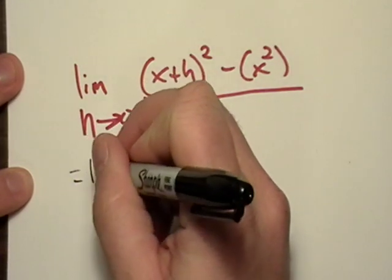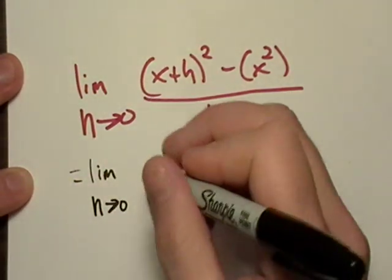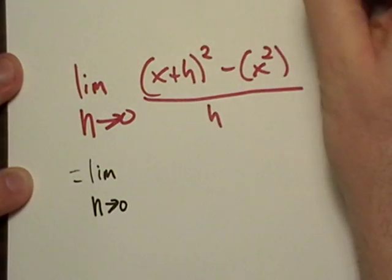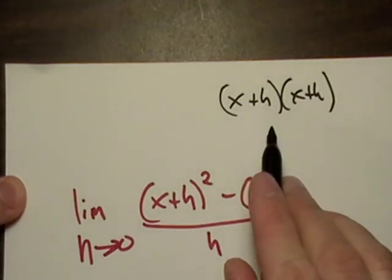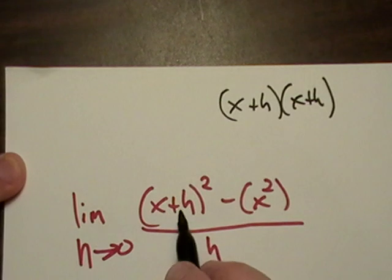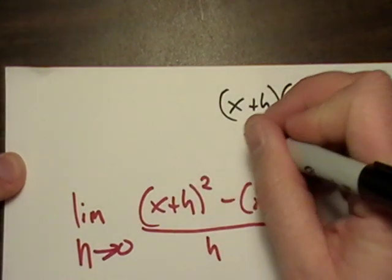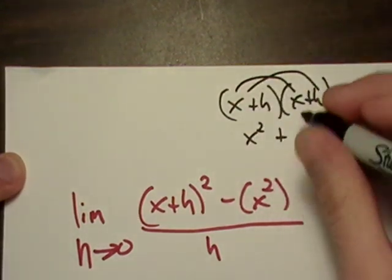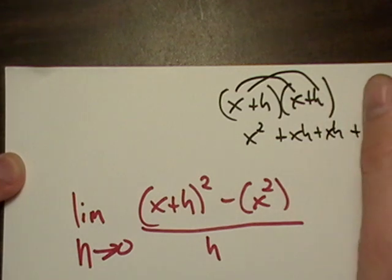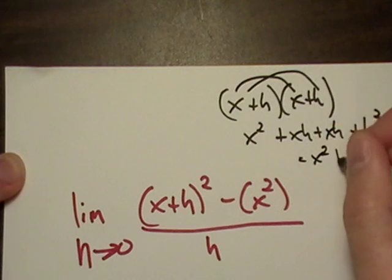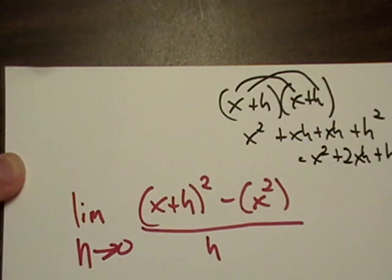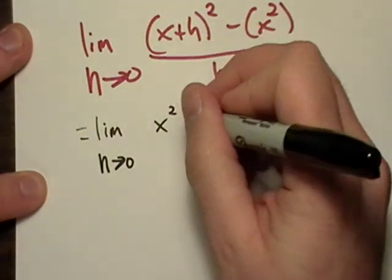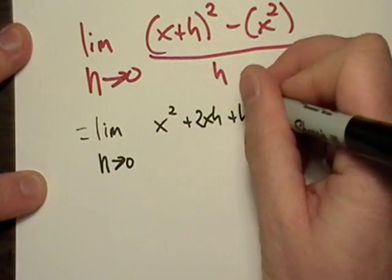What I'm going to do is expand this term and see if it does anything. I'm going to rewrite the whole limit as h goes to zero, and I'm just going to expand this. Sometimes this one you could do in your head, but for more complicated ones you might need the FOIL method. So I ended up with x squared plus 2xh plus h squared.